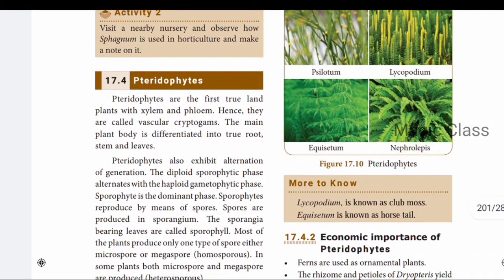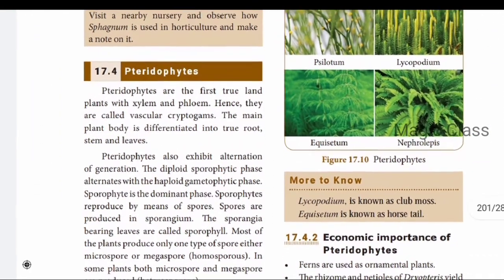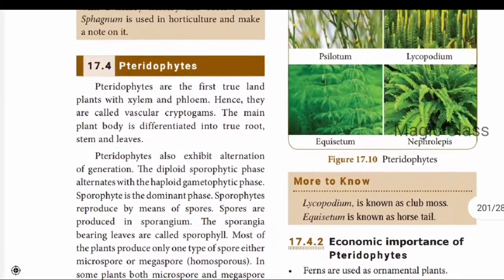The next topic is pteridophytes. Pteridophytes are the first true land plants with xylem and phloem for the transport of food and water. Hence they are vascular cryptogams.